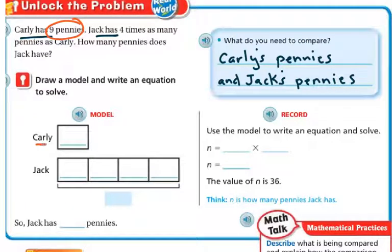So I know Carly, there's Carly. She has 9 pennies. And Jack has 4 times that amount. So he's got 1, 2, 3, 4 times that amount. And if it's 4 times that amount, Carly has 9, 9, 9, and 9. Because there's 1, 2, 3, 4 times that amount.